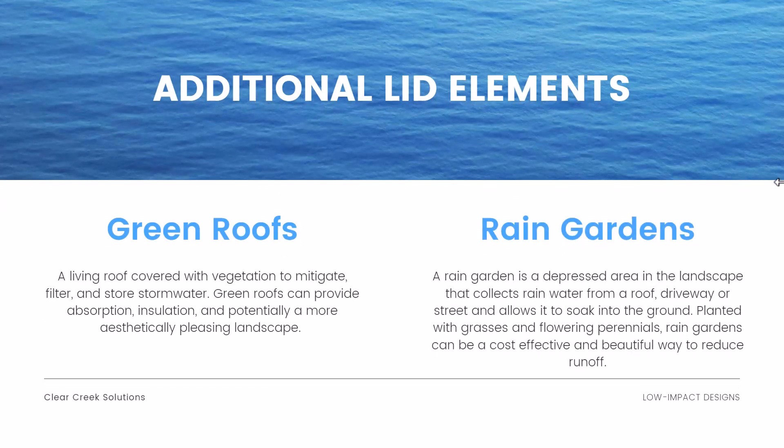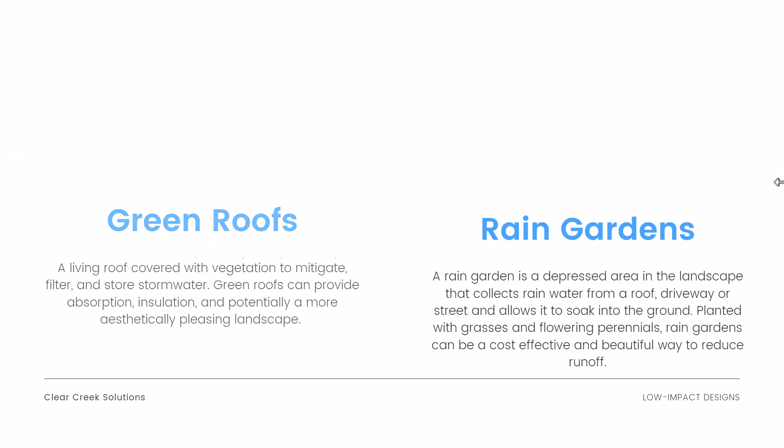Some additional LID elements include green roofs, which are a living roof covered with vegetation to mitigate, filter, and store stormwater. Green roofs can provide absorption, insulation, and a more aesthetically pleasing landscape. Then we have rain gardens — a depressed area in the landscape that collects rainwater from a roof, driveway, or street and allows it to soak into the ground. Planted with grasses and flowering perennials, rain gardens can be a cost-effective and aesthetically pleasing way to reduce runoff and allow filtration.